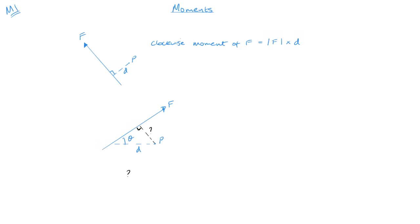I know that sin theta will be the question mark over D. So that question mark is D sin theta. So my formula in this case, and again it is making a clockwise moment, the moment will be that magnitude of F times D sin theta. So that is how I go about finding the moments that are acting on a particular rigid body about a point.